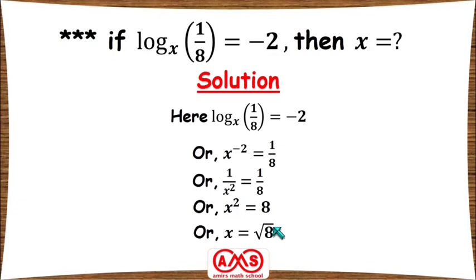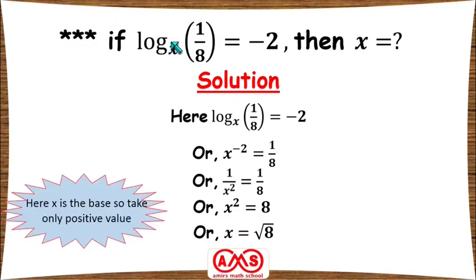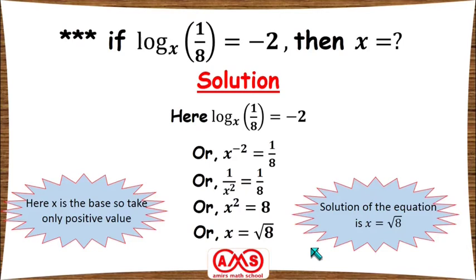We get two values: plus or minus square root of 8. Since x is the base of the logarithm, and the base of a logarithm can never be negative, we take only the positive value. Therefore x equals the square root of 8. In this way we can solve many problems of this type using the conversion formula between logarithm and exponential equations.